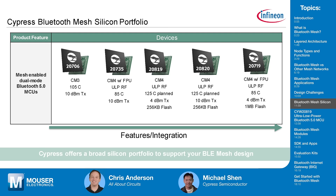The 20735 is the next generation of the 20706, with a key focus on low power — making it an ideal choice for coin-cell-powered sensor devices. The 20719 is from the same family as the 20735 and offers the same power consumption, but adds more RAM and one megabyte of integrated flash. If PCB real estate is critical and you can't fit external flash, the 20719 integrates everything.